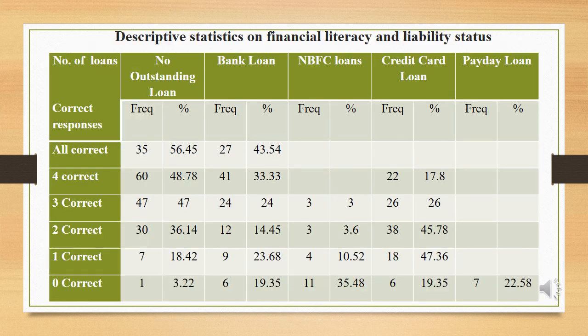To determine the type of loan possessed, respondents were given choices including secured and unsecured bank loans, secured and unsecured NBFC loans, credit card loans, payday loans, and no outstanding loans. The table reveals that liability holding is also a function of one's financial knowledge. As financial knowledge improves, respondents tend to show more discipline regarding their loan status. The percentage with no outstanding loans improved significantly with every increase in correct financial literacy responses, while loans from NBFCs increased with every wrong answer. Respondents who could not answer any financial literacy question were the ones to resort to questionable payday loans, establishing that improved financial knowledge leads to more careful borrowing behavior.